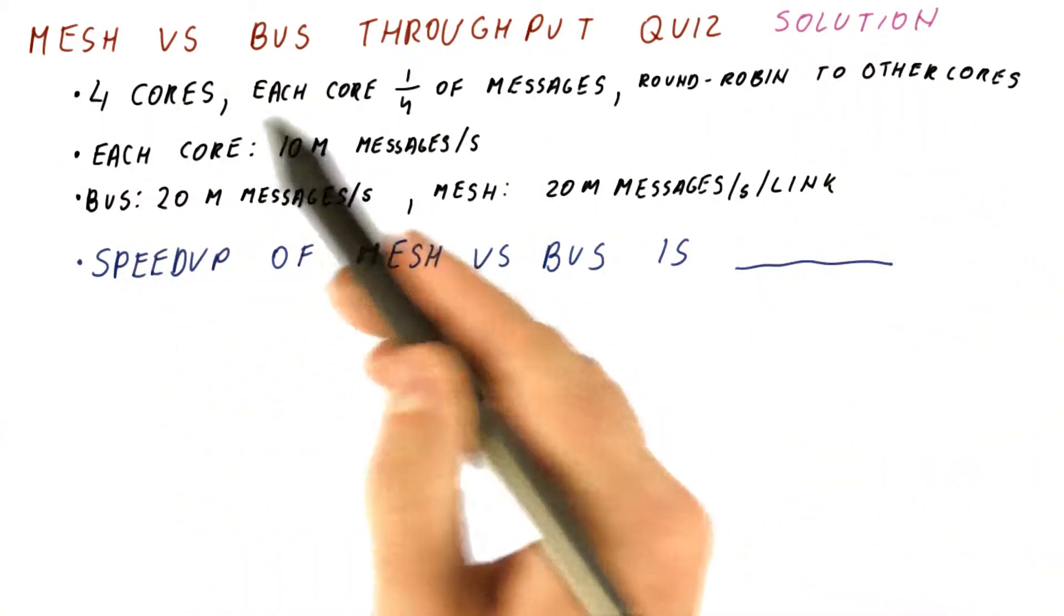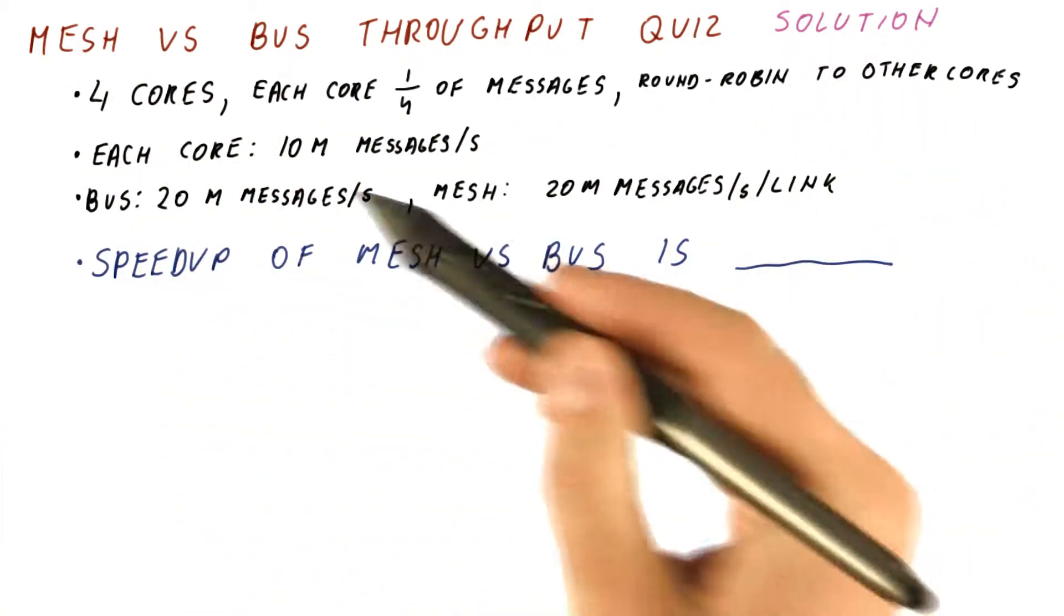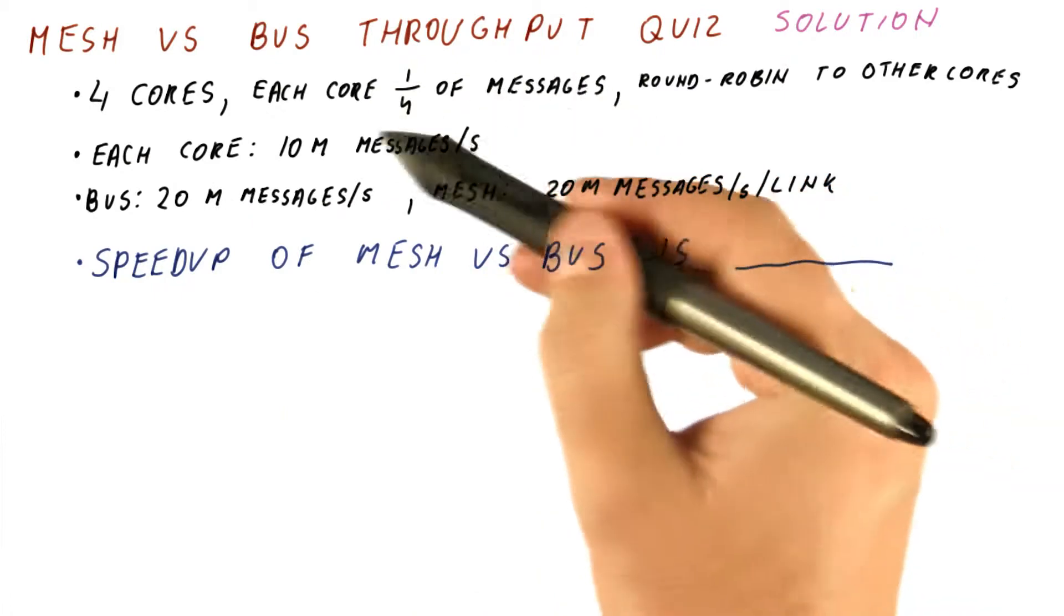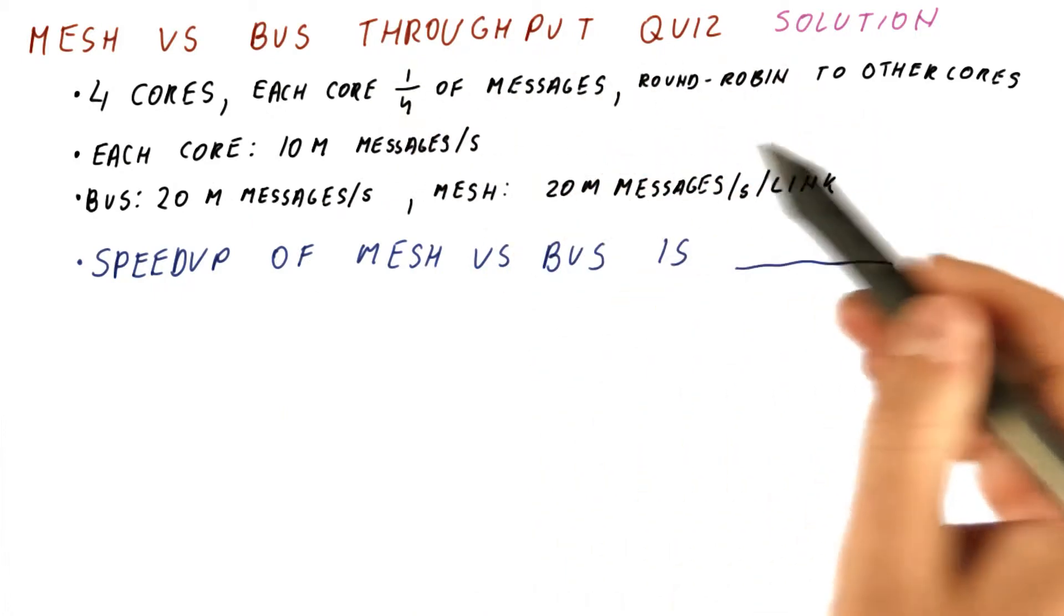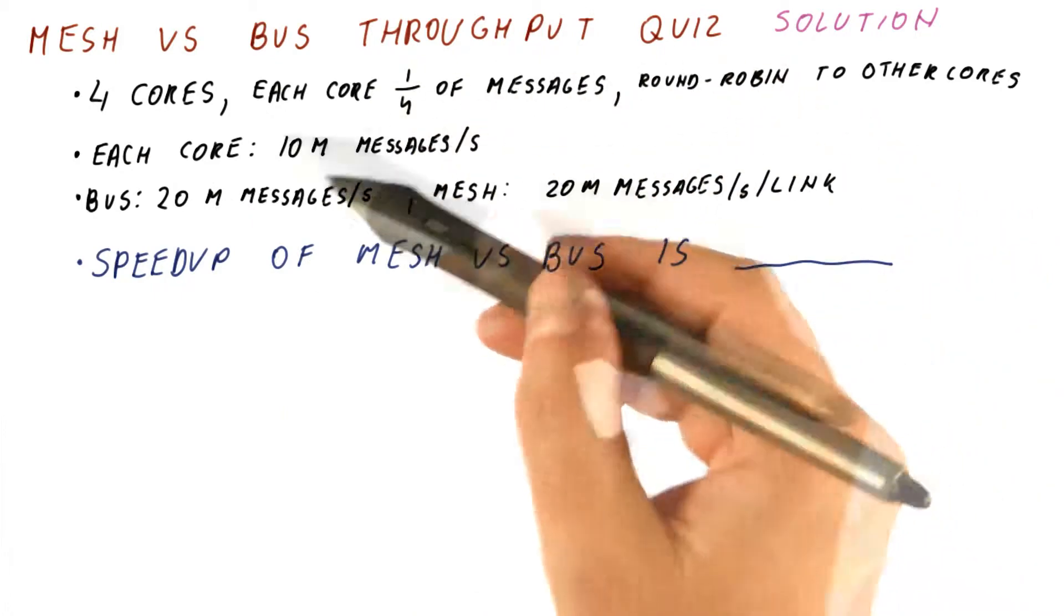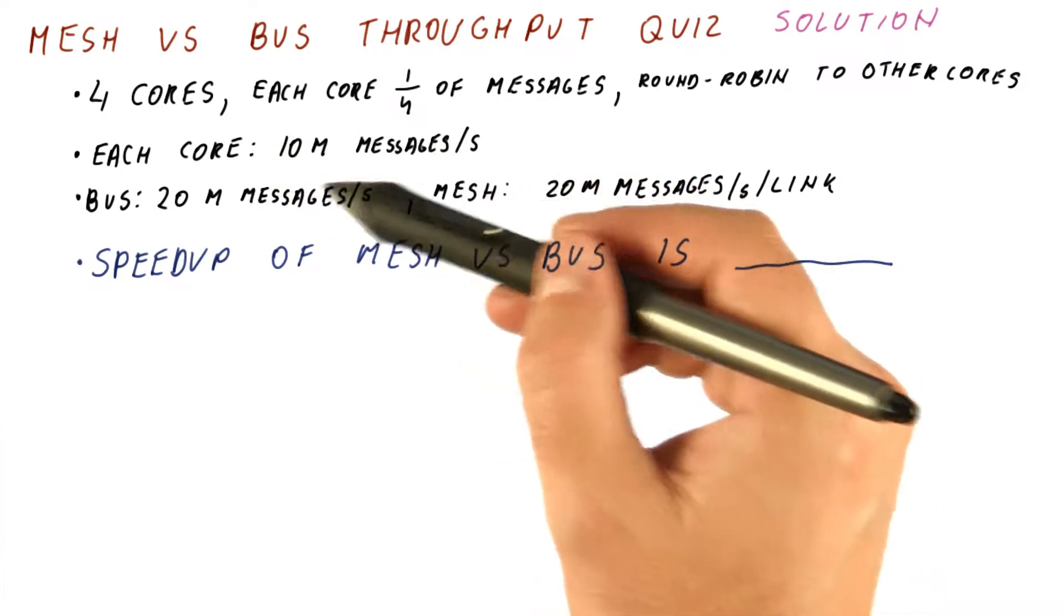So let's look at the solution to our mesh versus bus throughput quiz, where we had four cores with a totally random and even distribution of traffic among the cores. We are given what each core is sending.